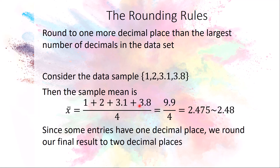We have rounding rules for computing means: round to one more decimal place than the largest number of decimals in the data set. For example, if a data set has values going to the tenths place, the mean must be reported to the hundredths. Follow this rule unless you are asked to round to a specific number of decimal places, which will happen in Hawks.